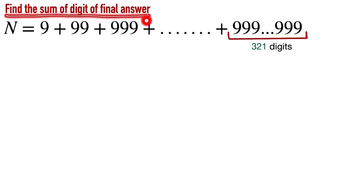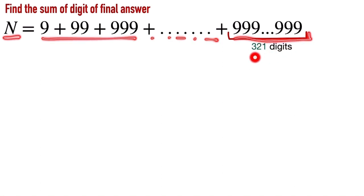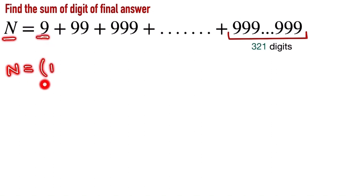Find the sum of the digit of the final answer. N is equal to 9 plus 99 plus 999 plus... it goes to the last digit, and the total digit in the last number is 321 digits. So we have to find the sum of the final answer.